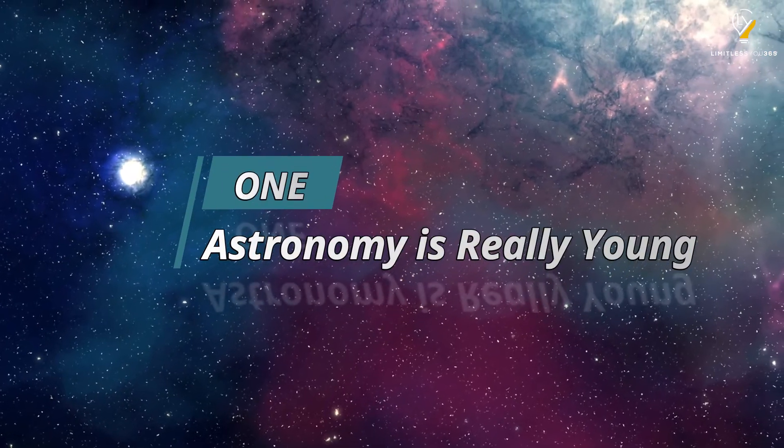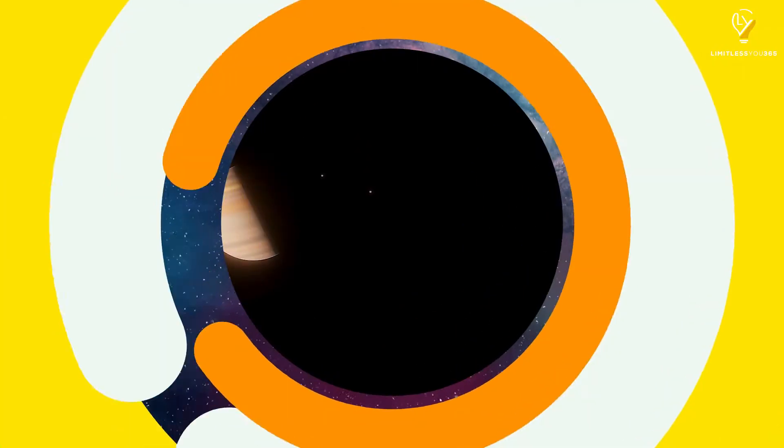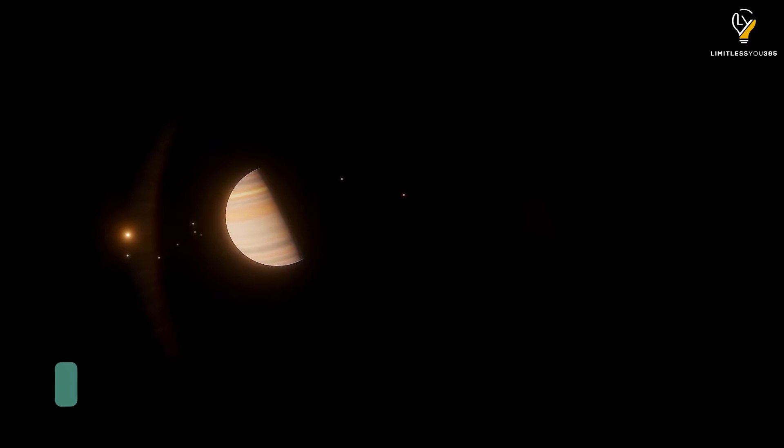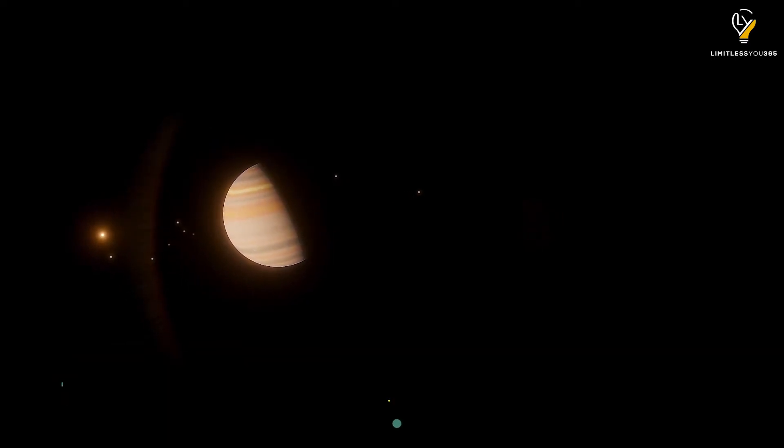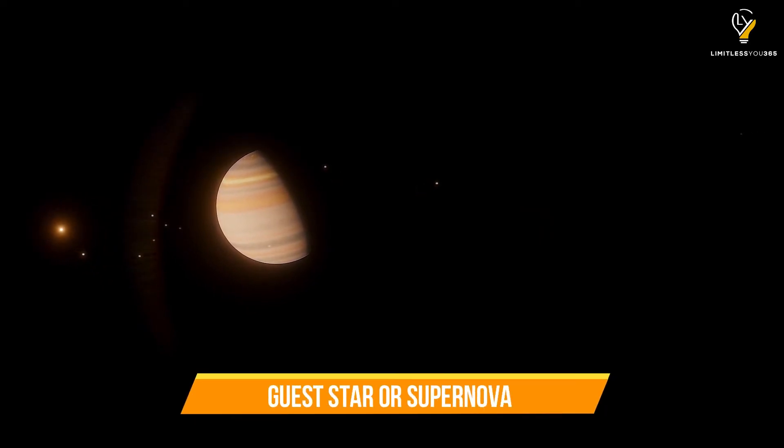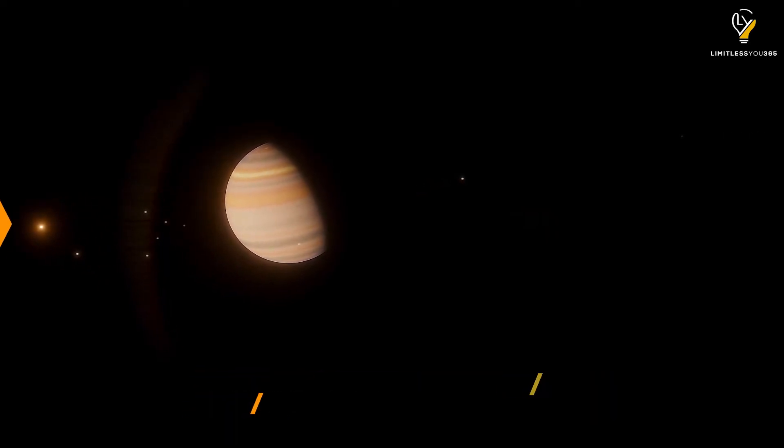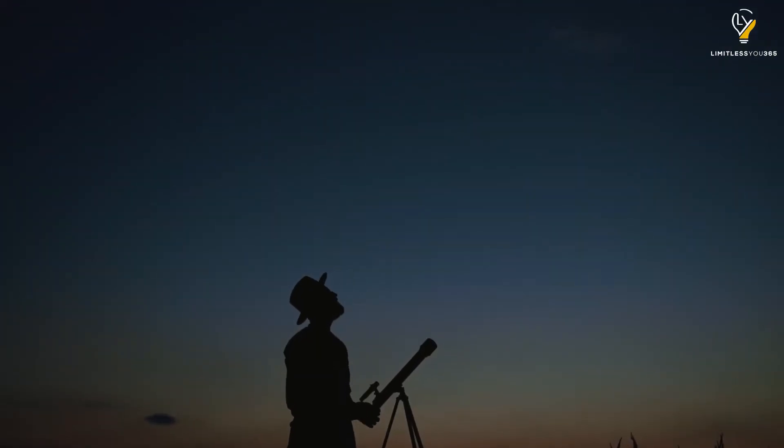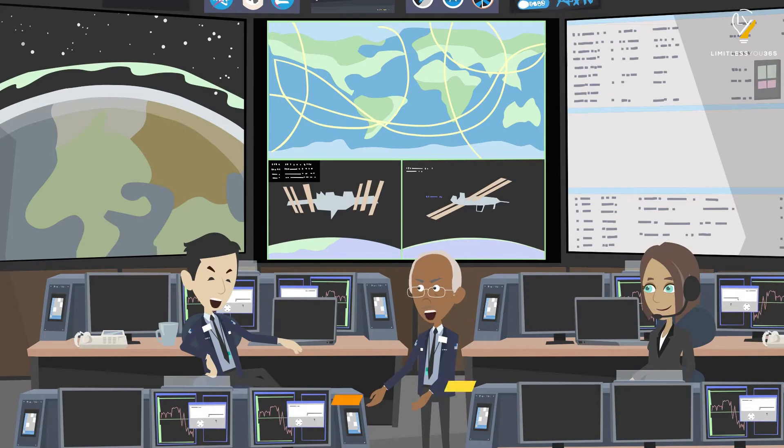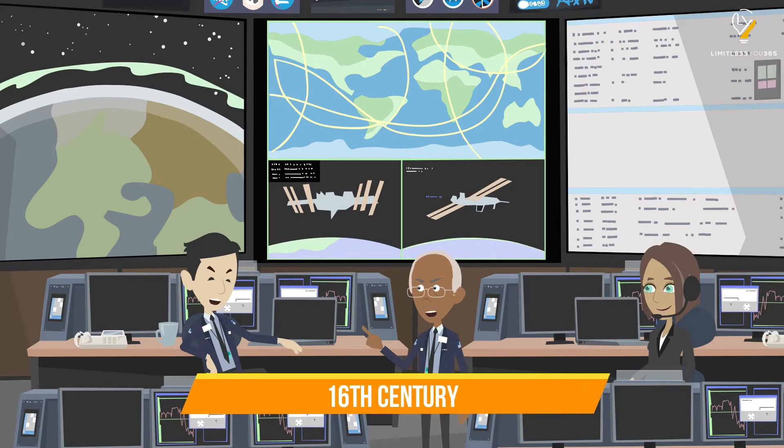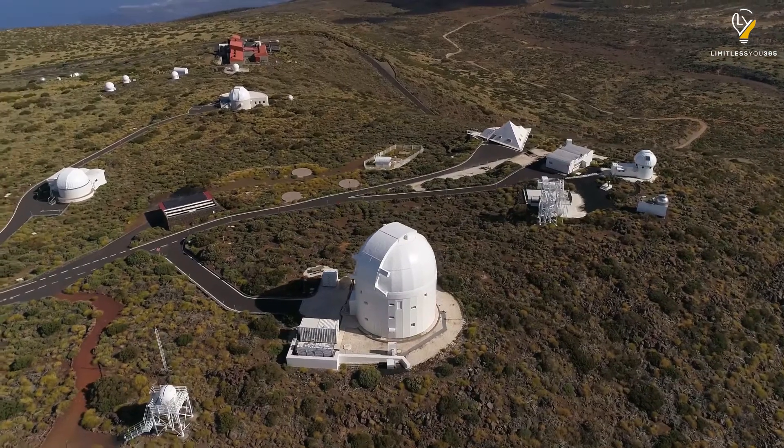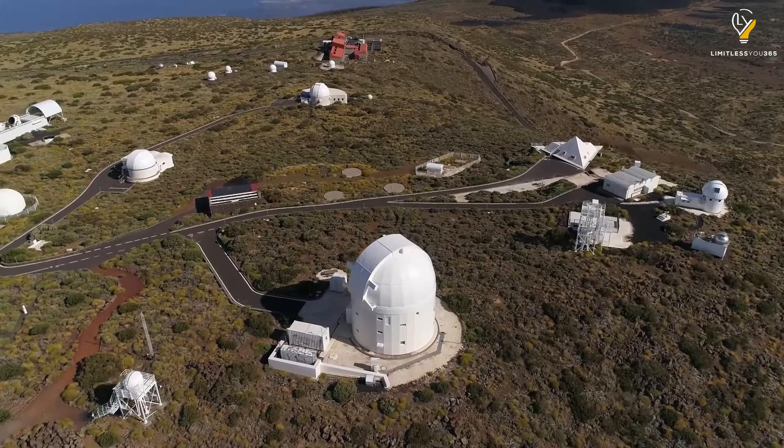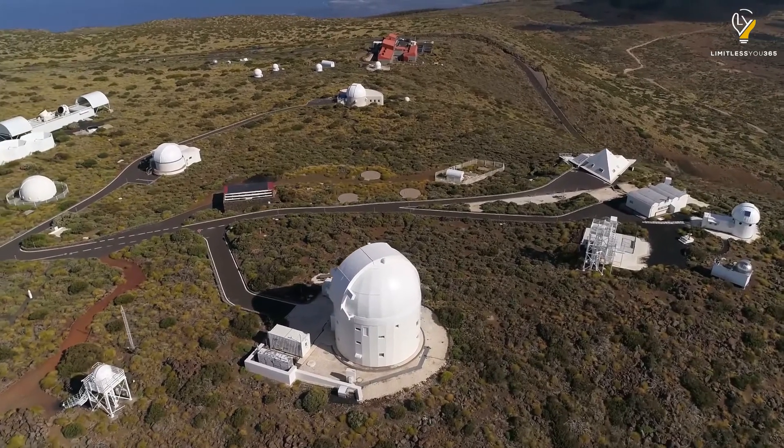Number one: Astronomy is really young. The first recorded scientific observation of an object in space occurred in 9th century China when a guest star or supernova was observed for 23 days. Modern astronomy isn't much older than that though. The scientific revolution and age of exploration really began in the 16th century, and it was only after that that astronomers could make any real progress in understanding our universe.